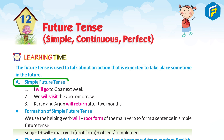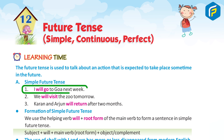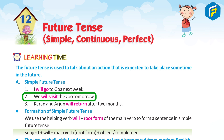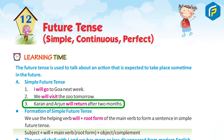Simple Future Tense. Examples: 1. I will go to Goa next week. 2. We will visit the zoo tomorrow. 3. Karan and Arjun will return after 2 months.